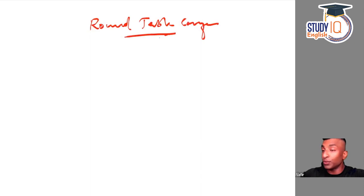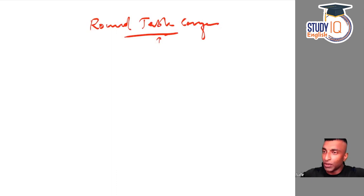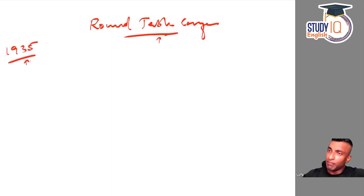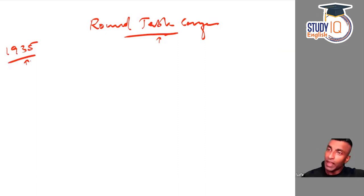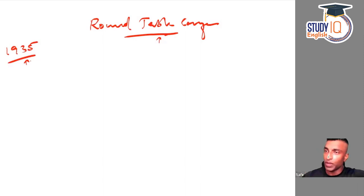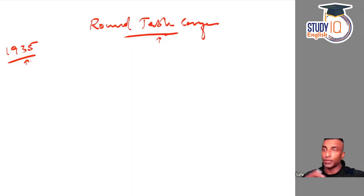Very important topic from modern India. We have to discuss three roundtable conferences. If you see, they will ask you questions on the 1935 Government of India Act. The outcome of these roundtable conferences is what actually led to the 1935 Government of India Act. So this is very important in that context.